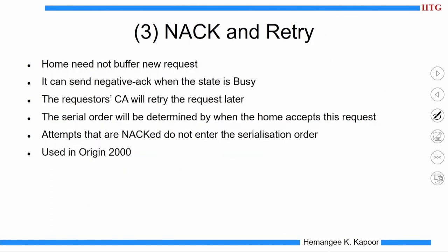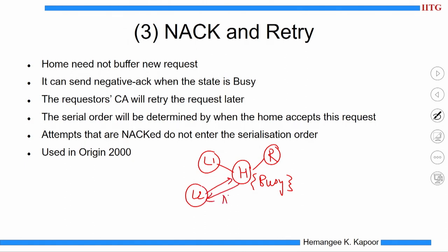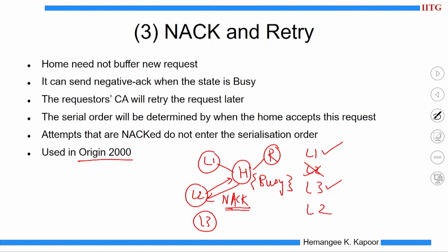NACK on Retry: the home node does not buffer the request but simply sends a negative acknowledgement to the requester, telling it to retry later. When L2 sends a request to H and H is busy, H sends a NACK. L2, L3, and any subsequent requesters will retry in the future. The order of NACKs does not decide the serial order — the order in which retries succeed determines serialization. This idea is implemented in the SGI Origin 2000 protocol.